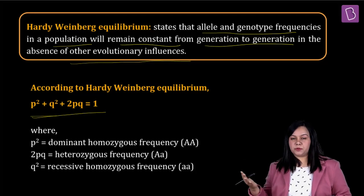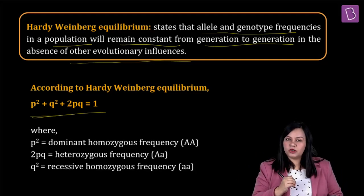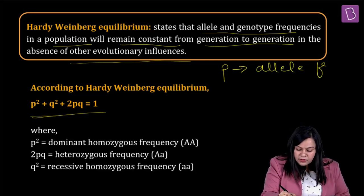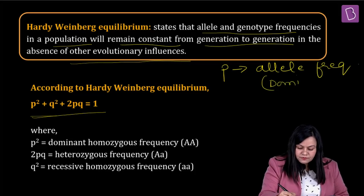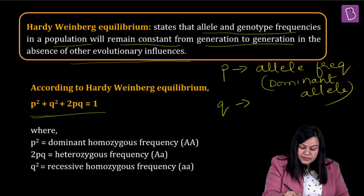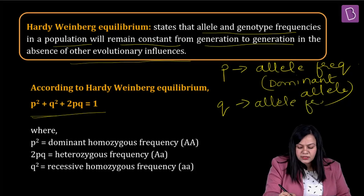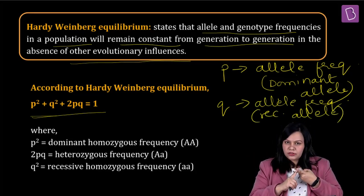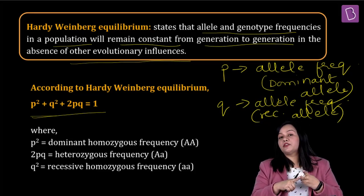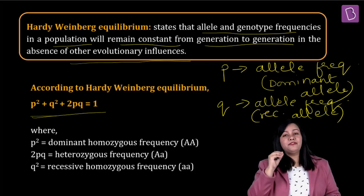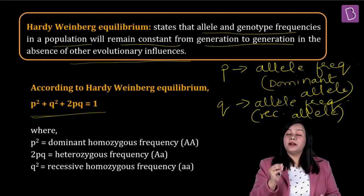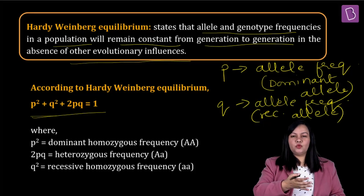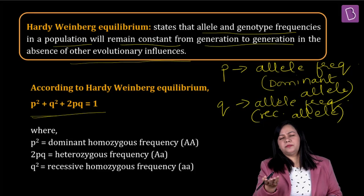In this mathematical expression where p² + q² + 2pq equals 1, p represents the allele frequency of the dominant allele, and q represents the allele frequency of the recessive allele. Please be very careful about these terms. They are simple and conceptual, but you need to understand what exactly p and q represent rather than just memorizing them.